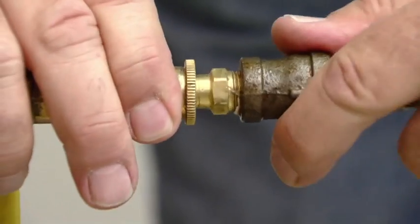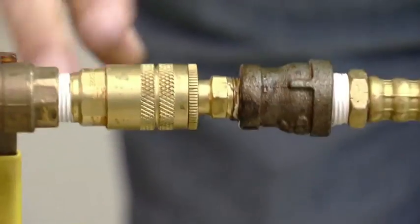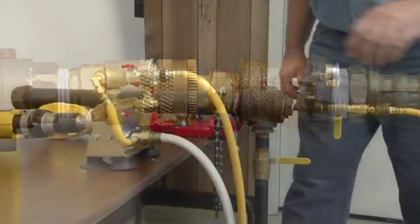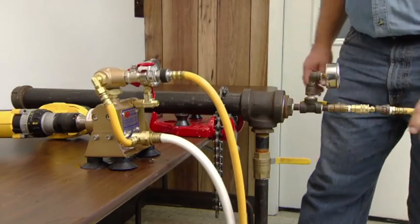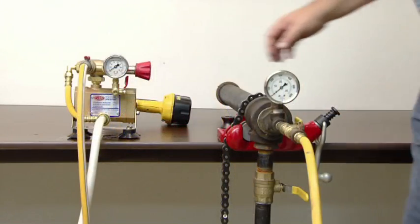Connect the end of the high pressure hose to the system to be tested. Open both the output valve on the pump and the valve on the system being tested. Run the pump.